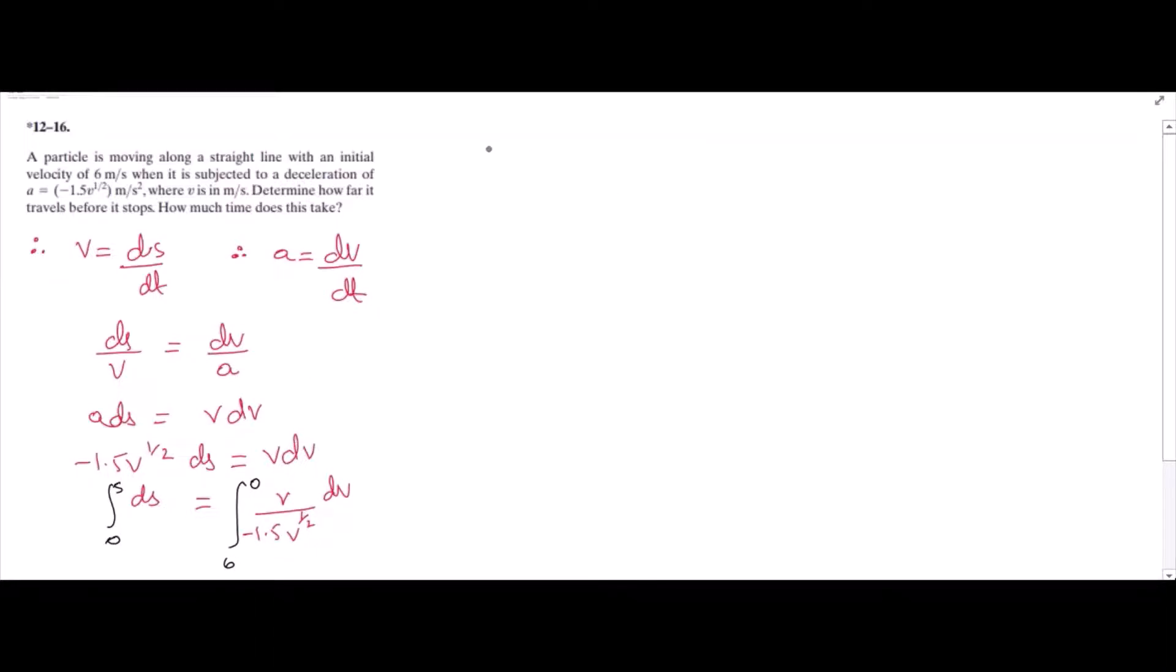So the left hand side can be written as s, and for the right hand side, we have if we take this out, then we would have integral from 0 to 6 of v to the power half dv. We can write it as v to the 1 over 2 dv.